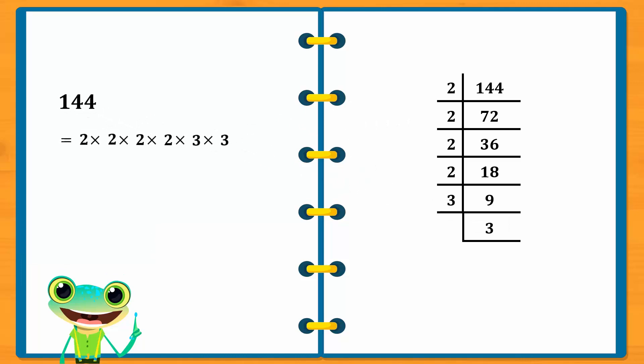The prime factors of 144 are therefore 2, 2, 2, 2, 3, and 3.